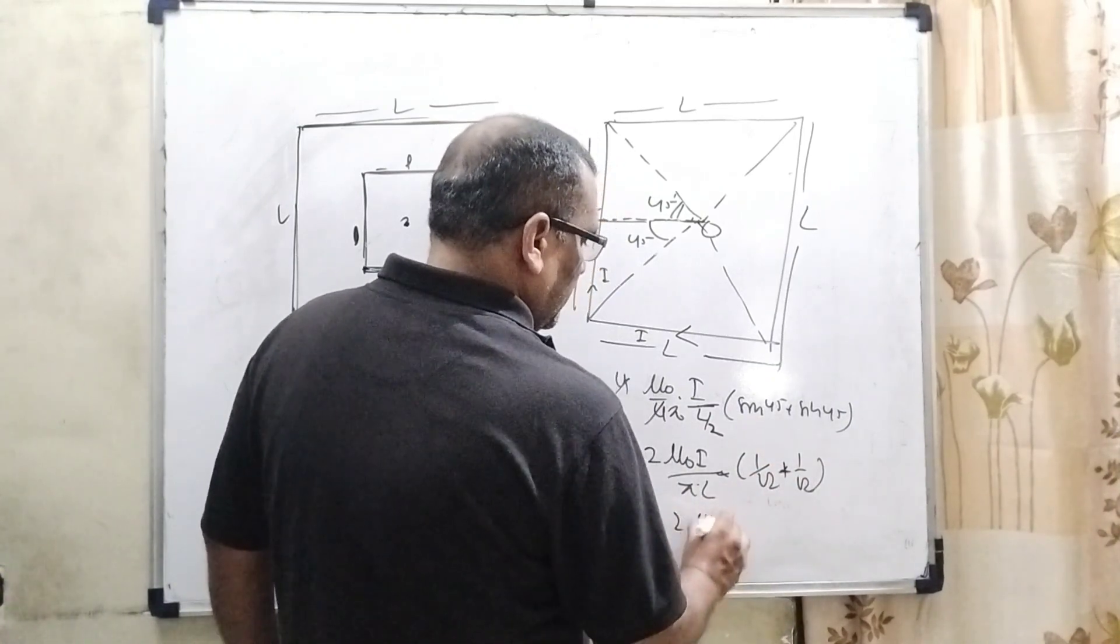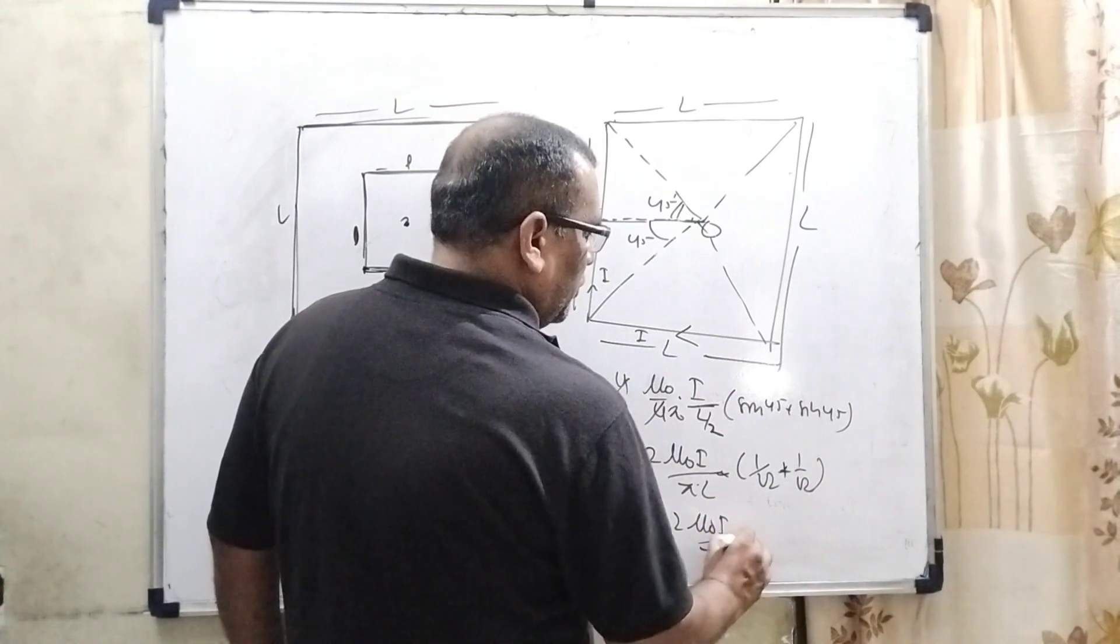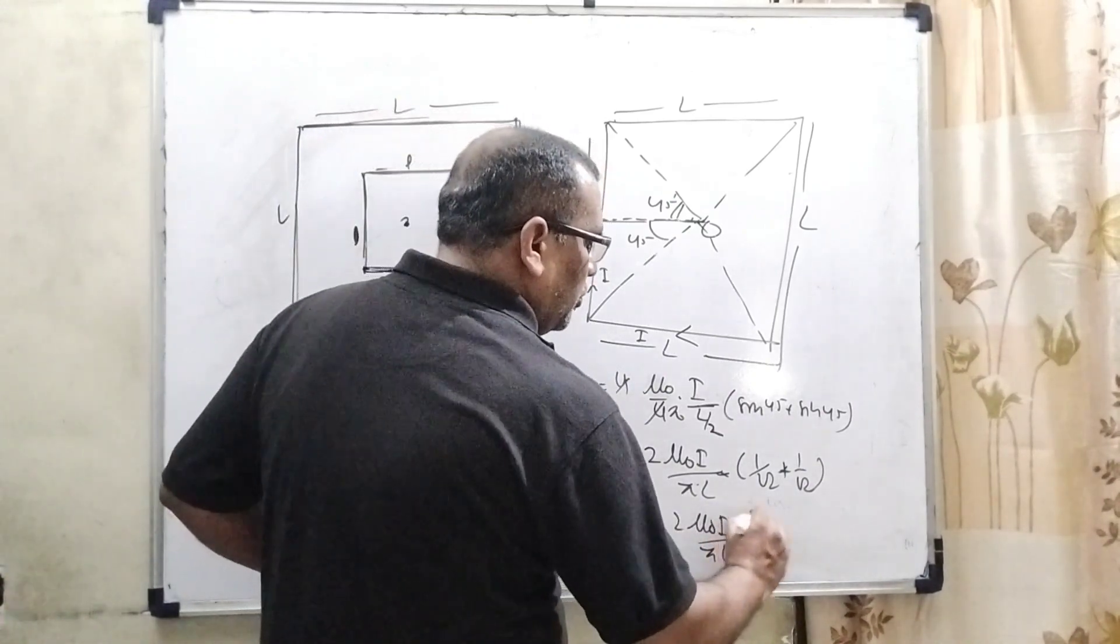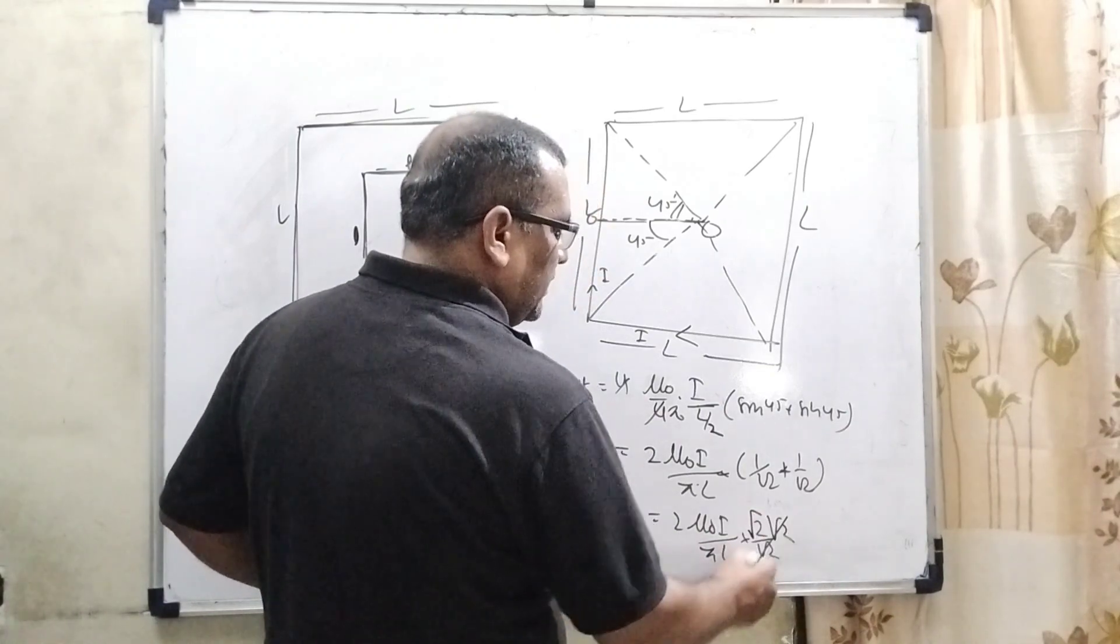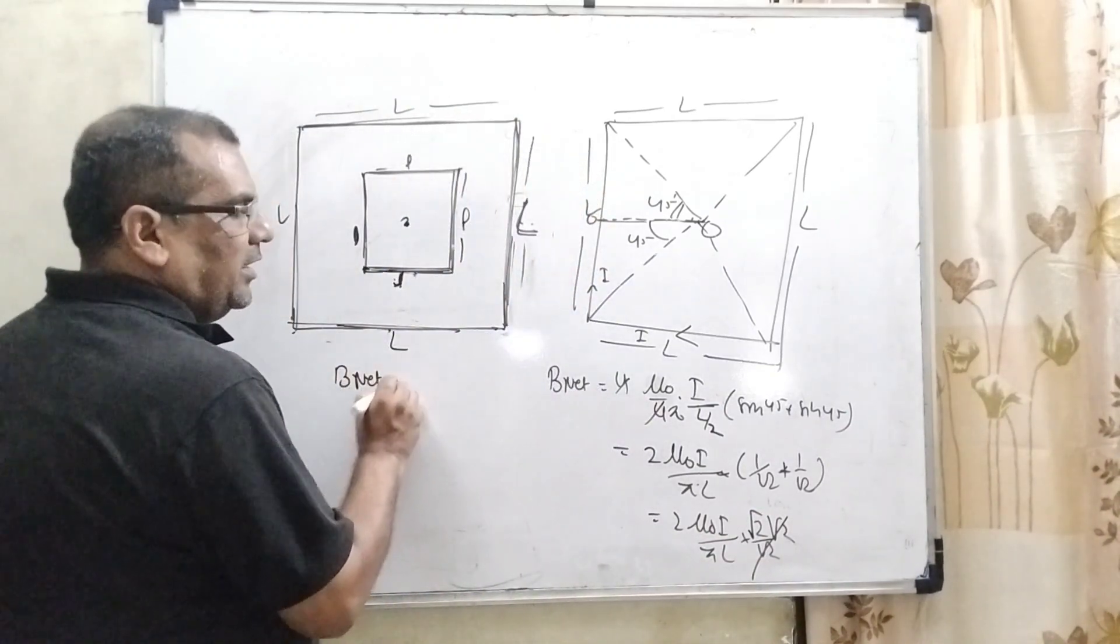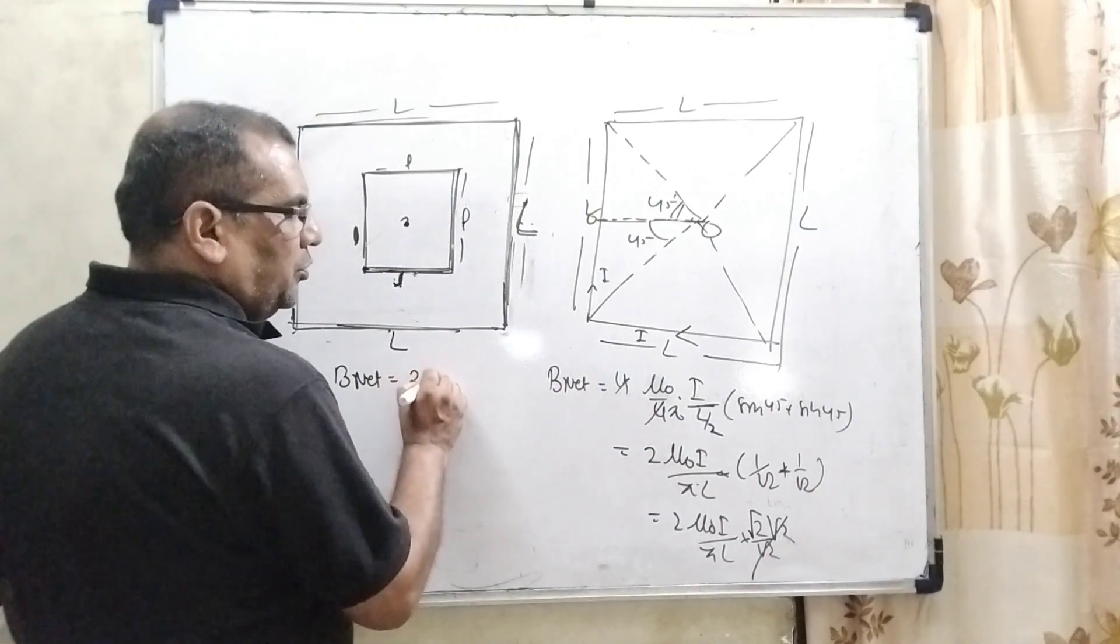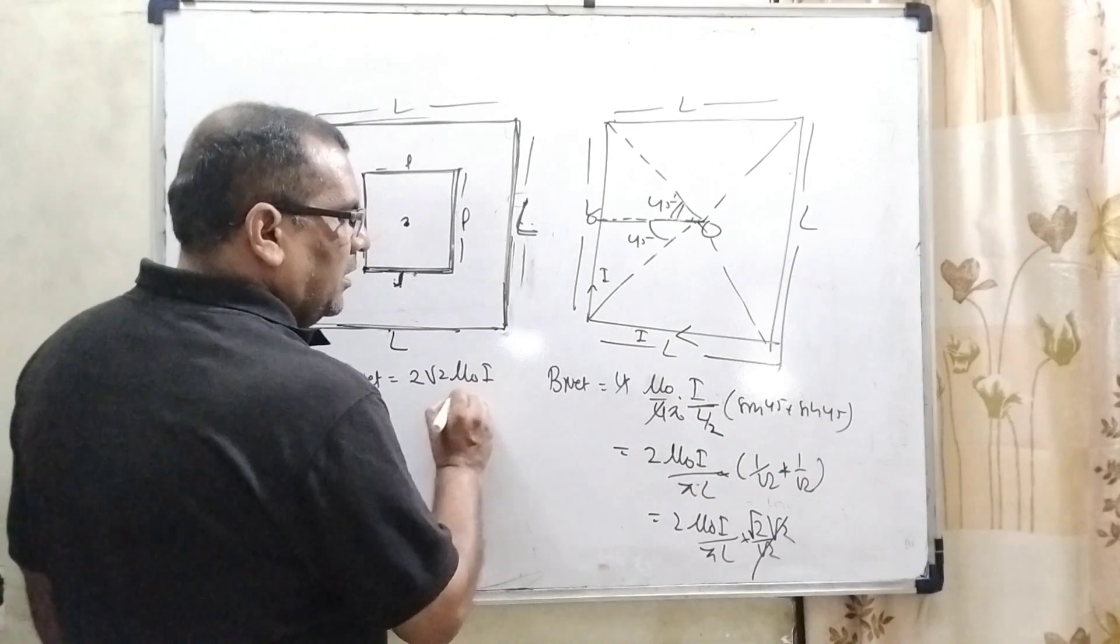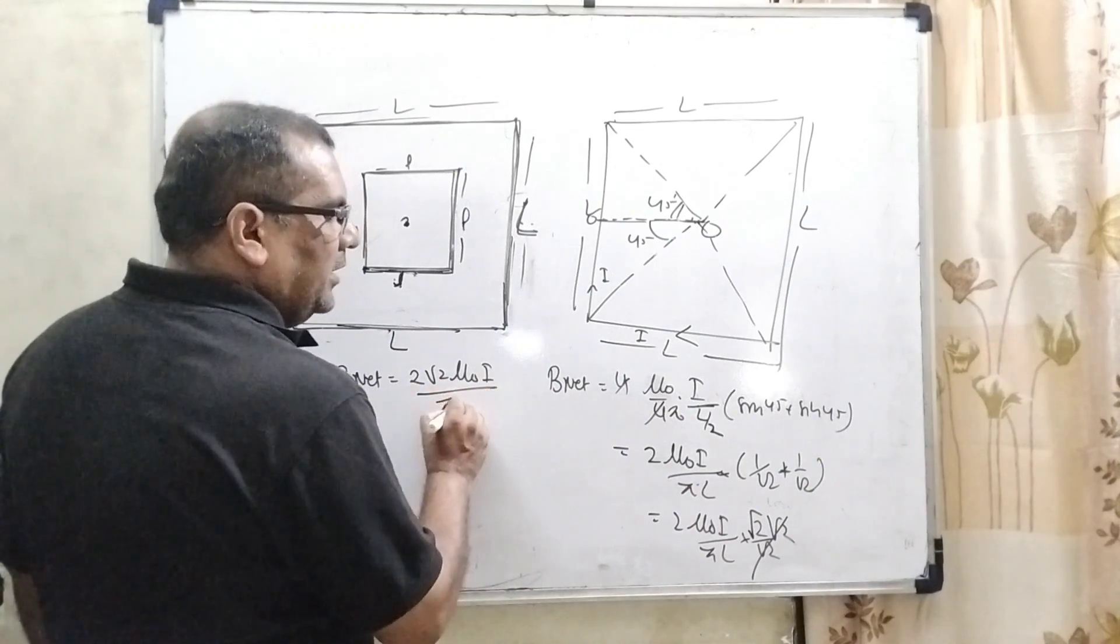That is 2 by root 2. And 2 can be written as root 2 times root 2. And this cancels out. So here we get net magnetic field 2 root 2 mu0 I upon pi L.